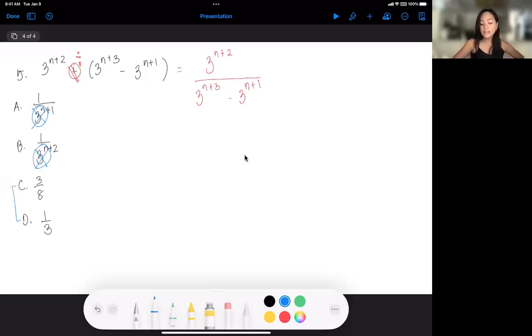So we can substitute N is equal to 0. If we do that, this will be 0, this will be 0, this will be 0. So that would be 3 to the 2, 3 cubed minus 3 to the 1, or simply 9 divided by 27 minus 3, and that would be 9 divided by 24.